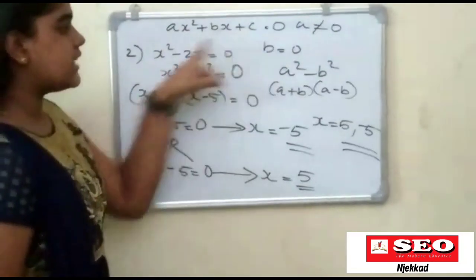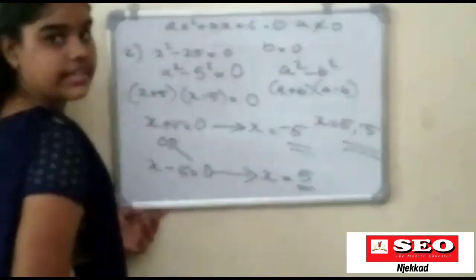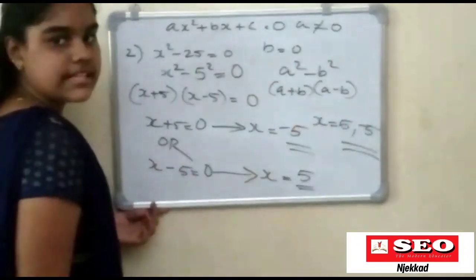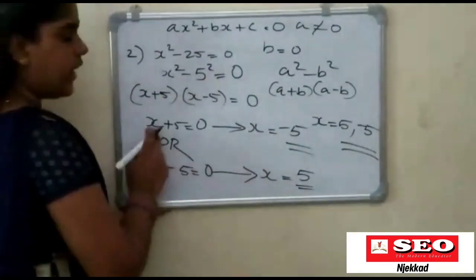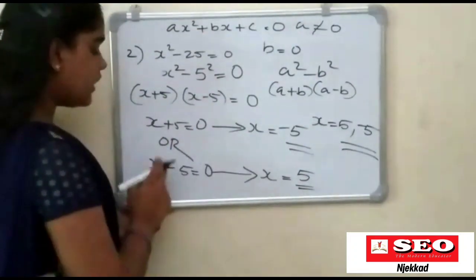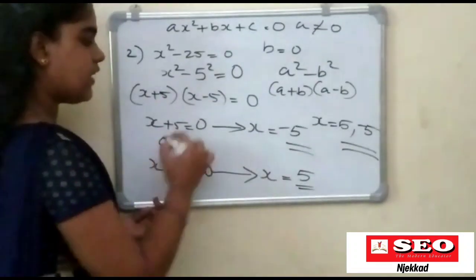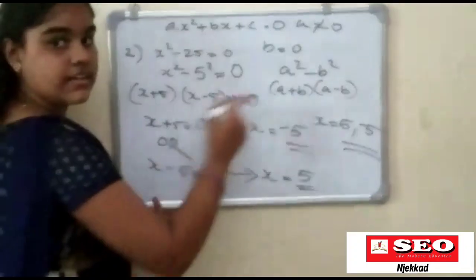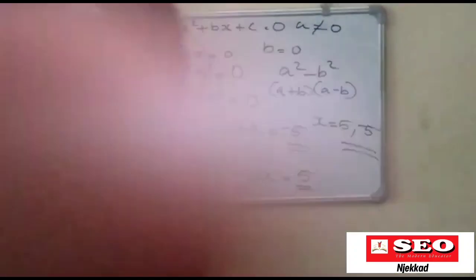Using the same formula, a squared minus b squared. We substitute into the equation: x plus 5 into x minus 5 is equal to zero. Therefore x plus 5 equals zero or x minus 5 equals zero. X is equal to plus or minus 5.